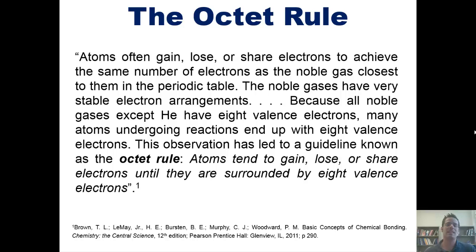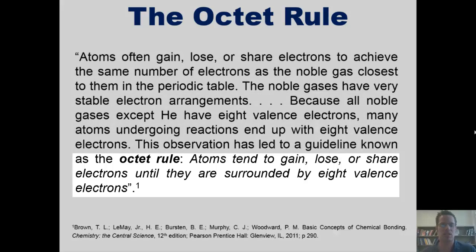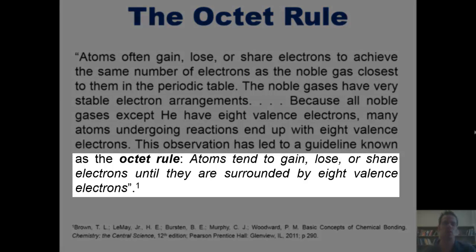According to our text, atoms often gain, lose, or share electrons to achieve the same number of electrons as the noble gas closest to them in the periodic table. Because all noble gases except helium have eight valence electrons, many atoms undergoing reactions end up with eight valence electrons. This observation has led to a guideline known as the octet rule, which says that atoms tend to gain, lose, or share electrons until they are surrounded by eight valence electrons.